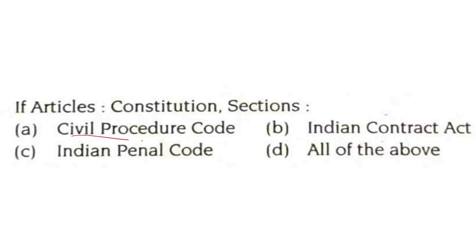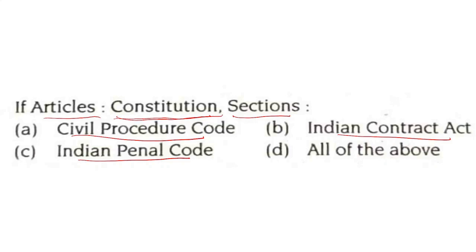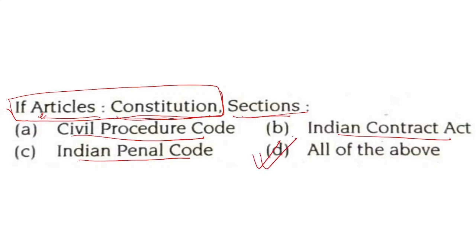If article is to constitution, then section is to civil procedure code, Indian Contract Act, Indian Penal Code — all of the above. Except the constitution, for all other laws like the Civil Procedure Code, Indian Contract Act, and any other law, we call them sections. Only for the Constitution of India do we use articles. So the answer is all of the above.